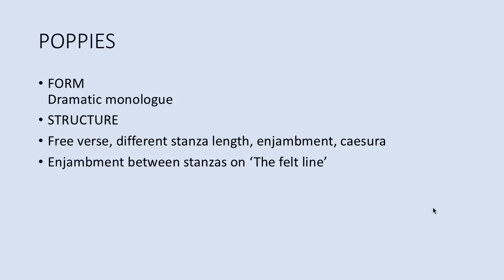So those are points on form and on structure. And you'll see that in many of the Power and Conflict poems there are similarities, particularly with this idea of lots of enjambment, caesura, and different stanza lengths. Lots of the poems use a chaotic structure to reflect the chaos and the uncontrollable nature of war and conflict.